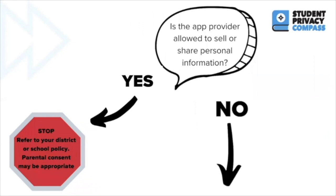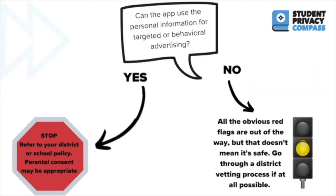Next, ask: is the app provider allowed to sell or share personal information? If yes, you must stop, refer to district or school policy, and think about whether parental consent is appropriate. If the app does not sell or share, move on to the last question: can the app use personal information for targeted or behavioral advertising? If yes, refer to district or school policy and think about parental consent. If no, you've checked for obvious red flags in this flowchart — but that doesn't necessarily mean it's safe. Go through a district vetting process if at all possible, and if not, go back to those commitments we've shared and check for those.